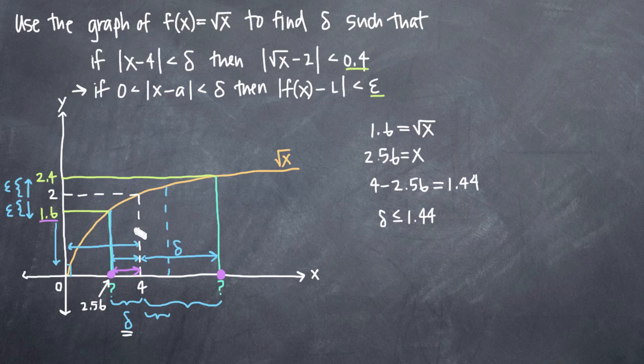If delta is less than or equal to 1.44, then what we're saying is that we will never move greater than 1.44 away from x equals 4, either to the left or to the right. And if we never move farther away from x equals 4 than 1.44, we will stay within this range here. We'll stay within this boundary and this boundary. And that guarantees that we'll stay within this boundary, 1.6, and up here within 2.4.